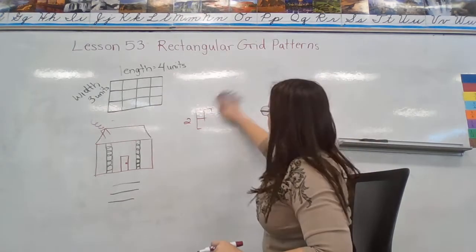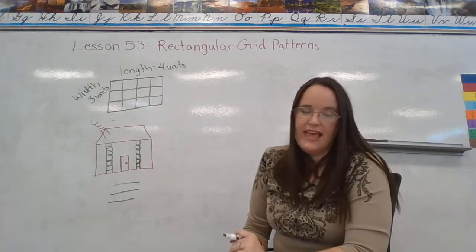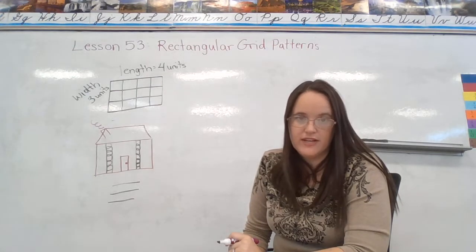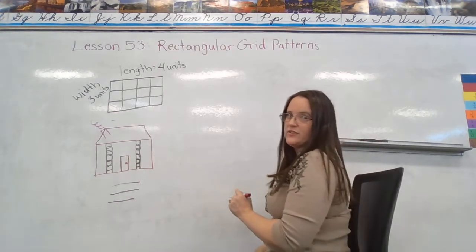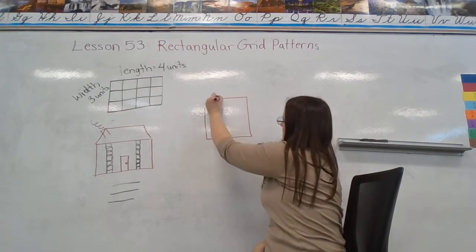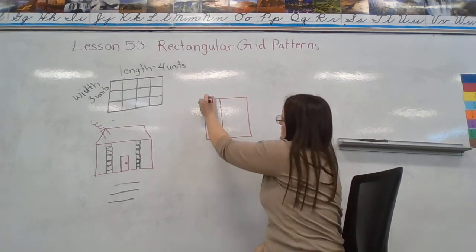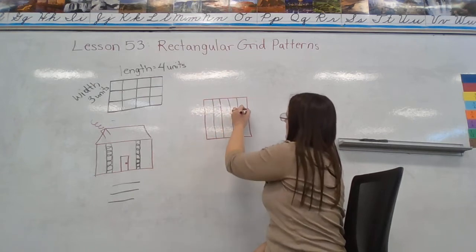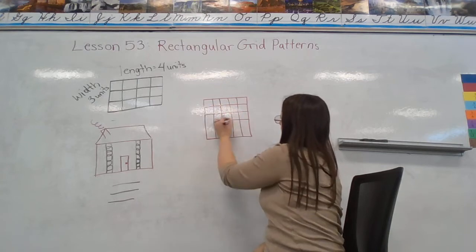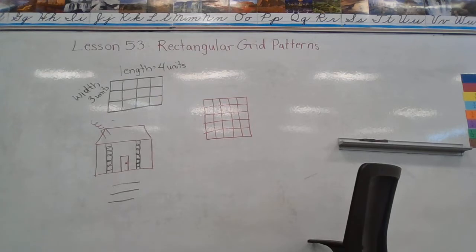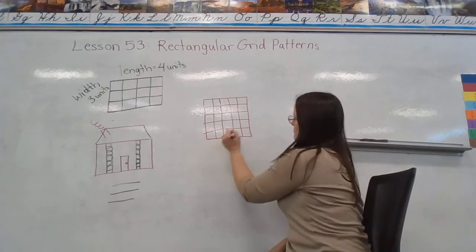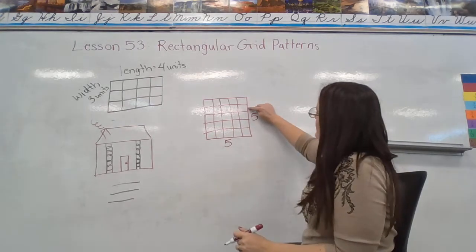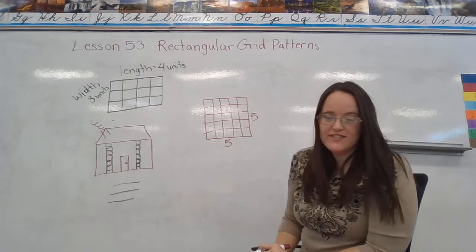For the next one, you're going to draw a five unit by five unit rectangle. Five units by five units. And then tell me how many small squares are inside. Please excuse my phone. Okay, so for this one we have five by five. Let's count by fives. Five, ten, fifteen, twenty, twenty-five square units.